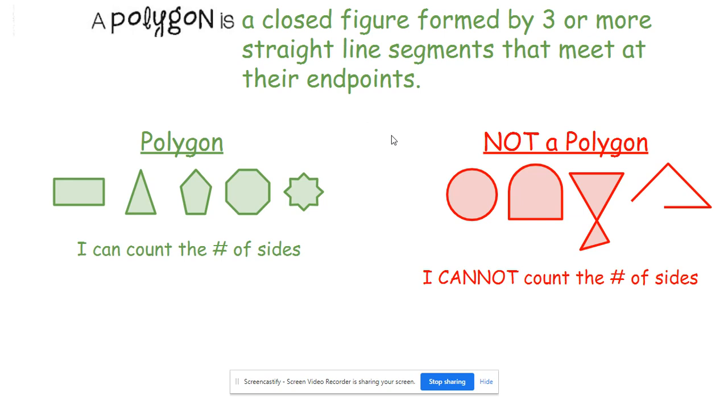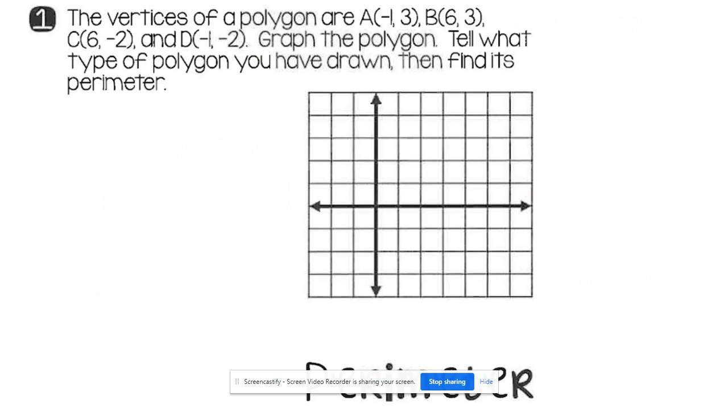Now that we've established the difference between what makes a polygon a polygon, let's actually graph some to find the area and perimeter of them. This first one, it gave me the vertexes A, B, C, and D. So that's one, two, three, four different vertexes. So let's go ahead and graph them. And remember, whenever you're given a coordinate point, the first one is the X. Think of it as the horizontal one, just like a number line.